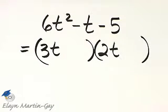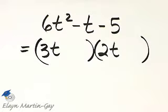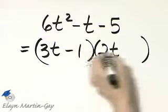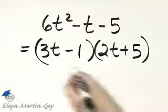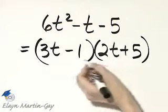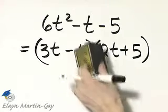What about factors of negative 5? Let's try negative 1 and positive 5, and let's see what happens. Product of the outside terms, that's 15, and that's negative 2, so that will not work out.